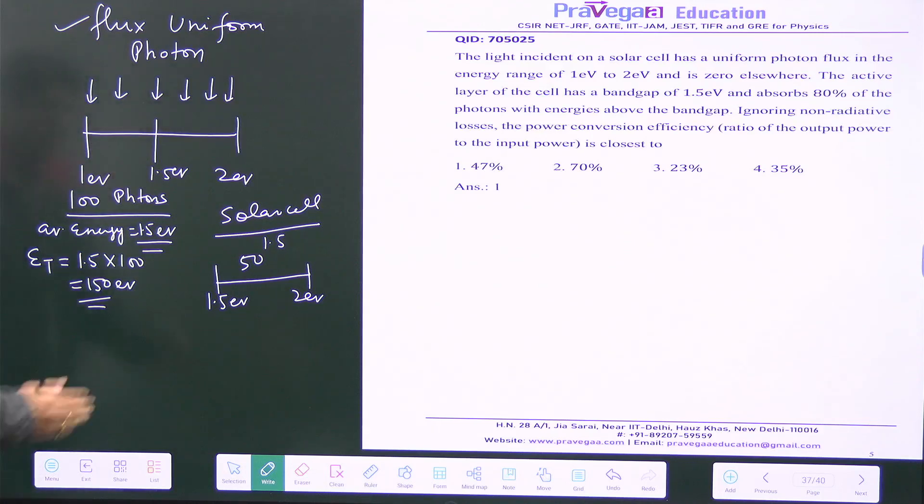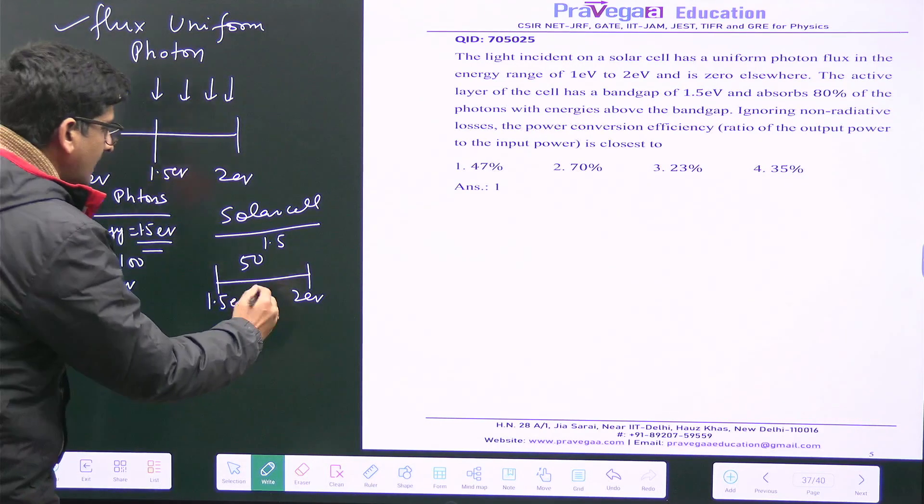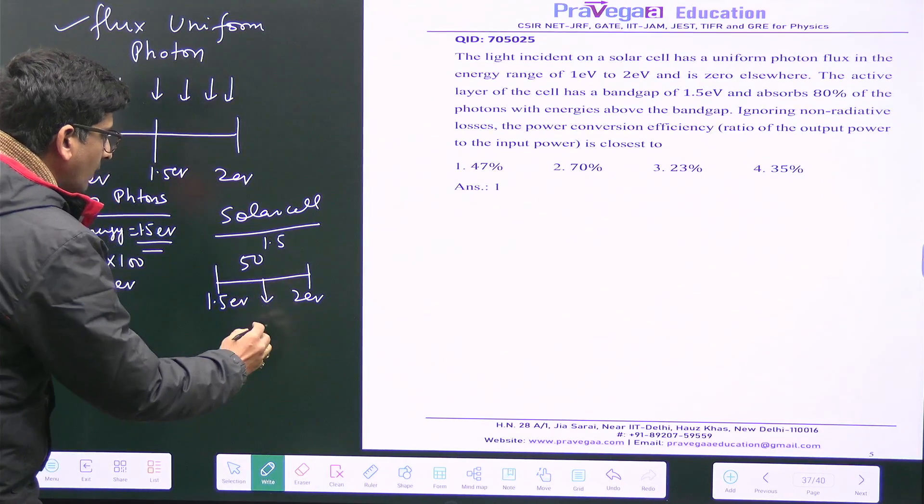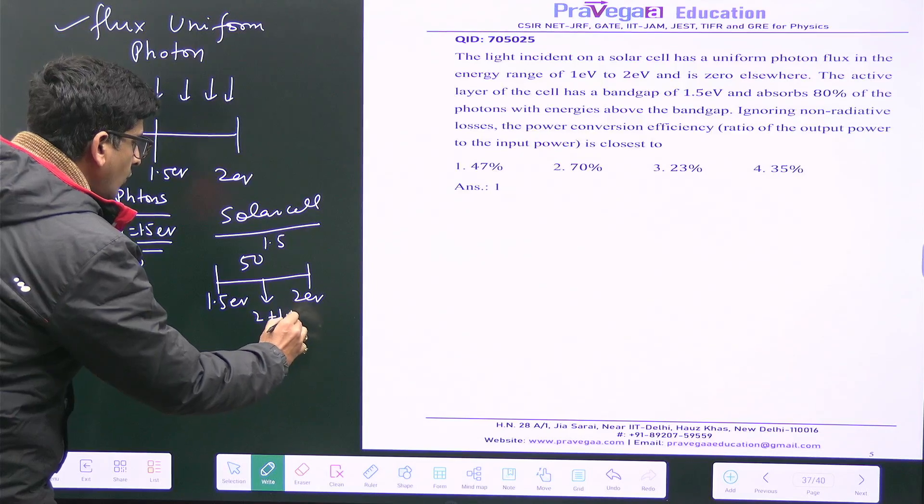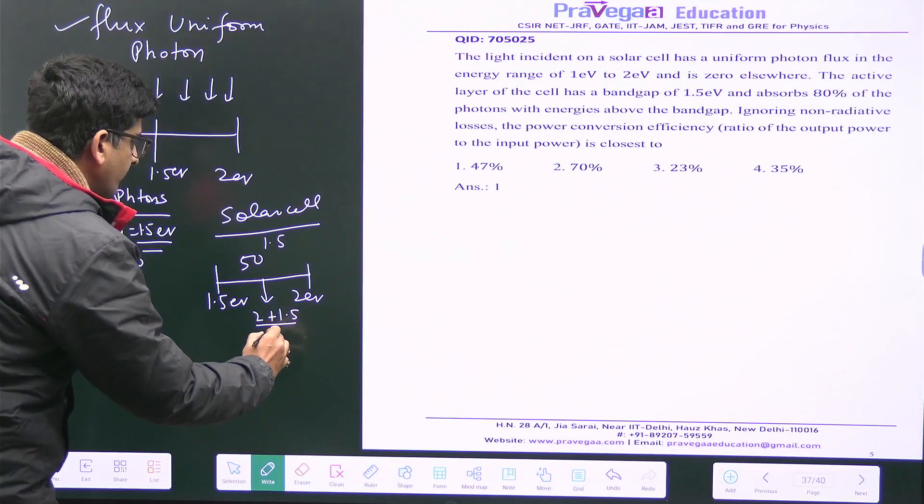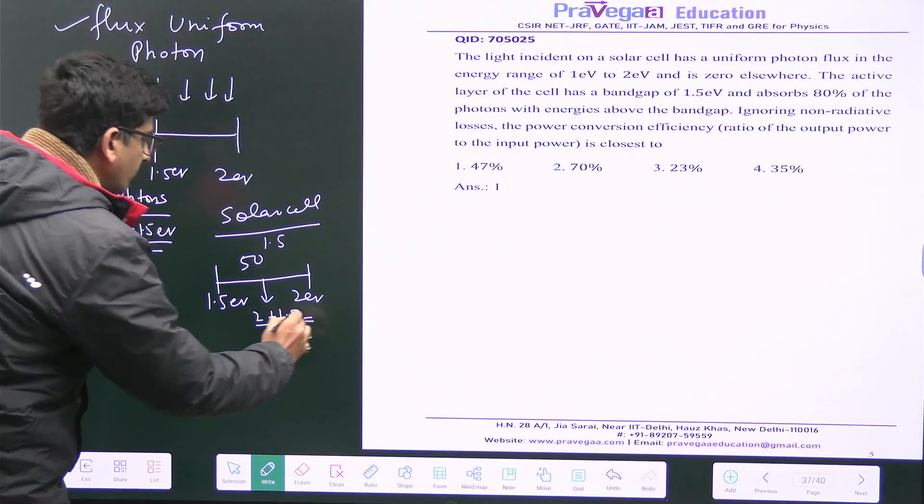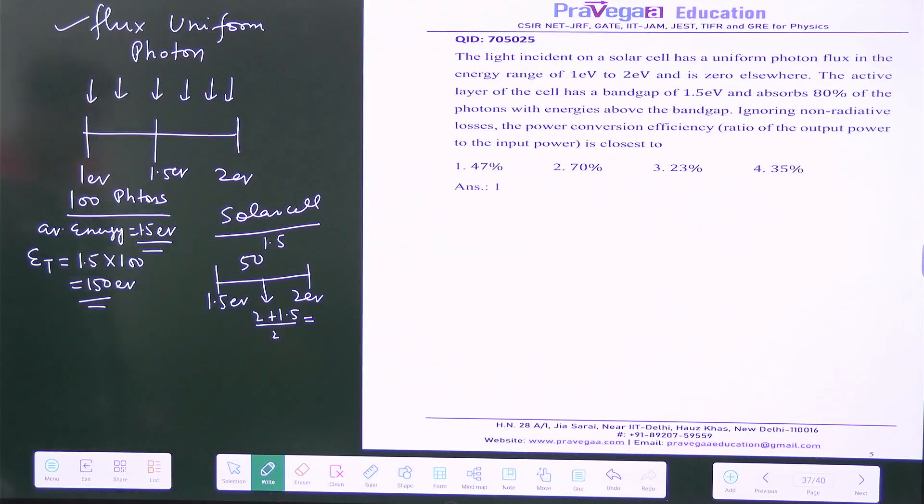This is absolutely clear because of the equal distribution. What is the average energy here? I want to calculate total energy, so first of all get the average. Average energy is 2 plus 1.5 by 2, so what is this number? It is 1.75.